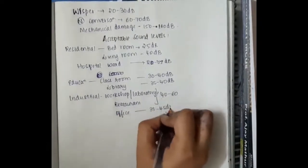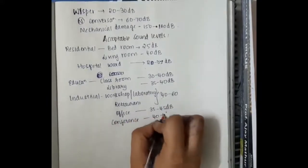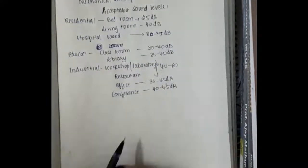In offices, 35 to 45 dB is acceptable. And in conferences, 40 to 45 dB are acceptable.